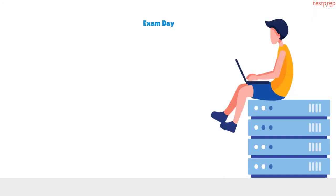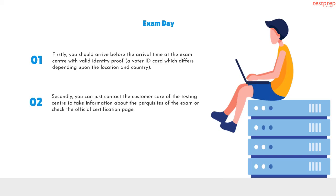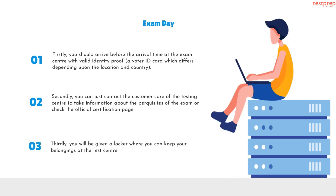On exam day, after crossing all the hurdles, all your hard work is going to take shape. Remember the following points: First, arrive before the arrival time at the exam center with valid identity proof, such as a voter ID card, which differs depending on location and country. Second, contact the customer care of the testing center to get information about the prerequisites of the exam, or check the official certification page. Third, you will be given a locker where you can keep your belongings at the test center.